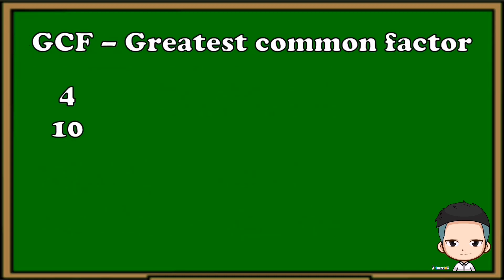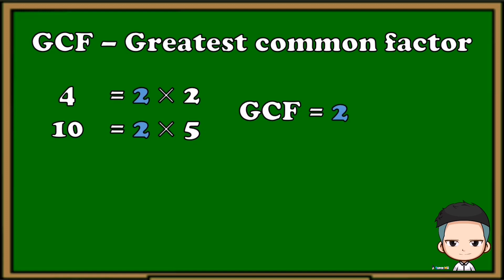We have here 4 and 10. First we need to know the prime factors of each number. The prime factors of 4 are 2 and 2, and the prime factors of 10 are 2 and 5. As we can see, they have a common factor of 2. Since this is the only common factor, the greatest common factor of 4 and 10 is 2.